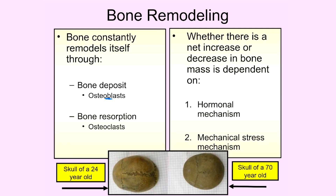At the same time, we have osteoclasts that are always breaking down bone — these are our bone resorbers. Normally, under normal circumstances for an adult whose nutrition and activity levels aren't changing, there's a very nice communication happening between osteoblasts and osteoclasts. The osteoclasts say, 'We took down this much bone, so you need to put back this much,' and they work together so that bone mass and bone density stay consistent over time.